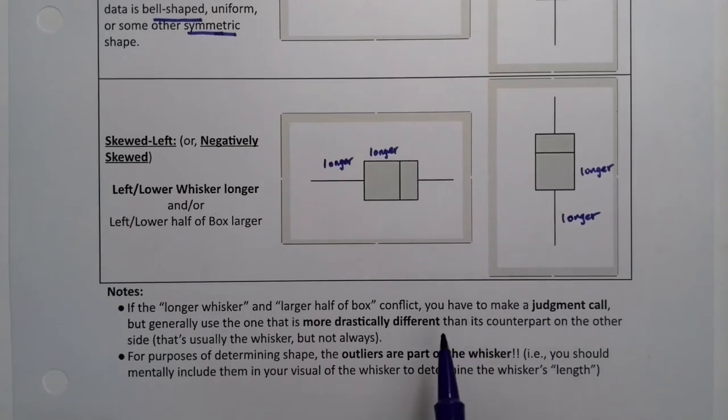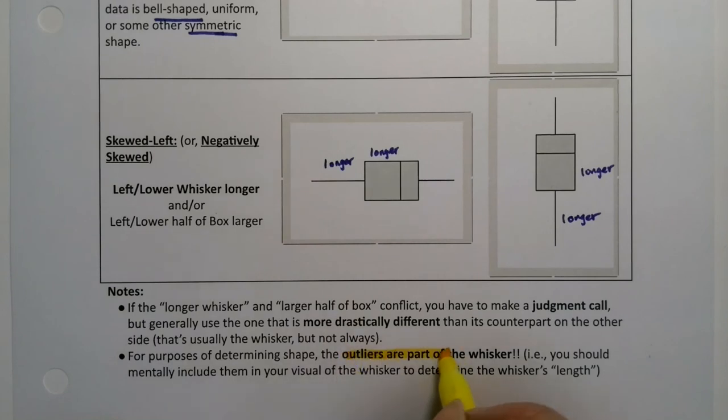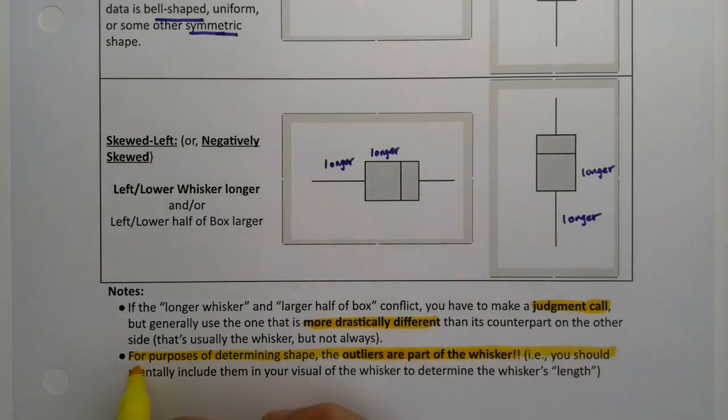The answer is you have to make a judgment call. You basically base it on whichever is the more drastically different. Usually it's the whisker, but not always. But you usually look to the whisker because that's usually a more dramatic difference. And one other thing, it cannot be stressed enough.